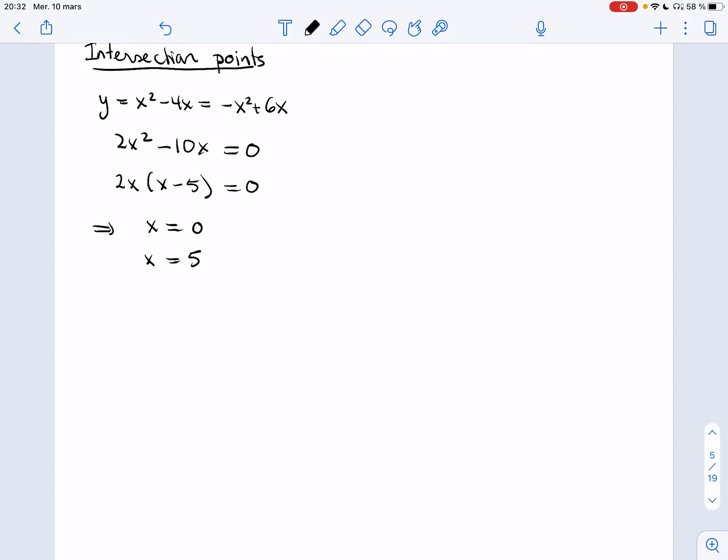Alright, so if x is 0 then y is 0 squared minus 0 is 0 as well. And I plugged it into this one but really both should give you the same value since they're intersection points. And at 5, I'm going to plug it into this one as well. 5 squared minus 4 times 5. I get 25 minus 20. I get 5.